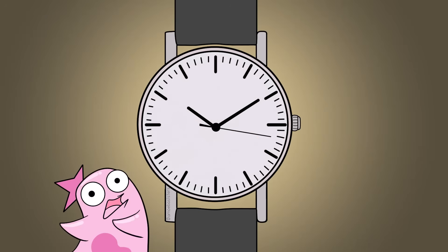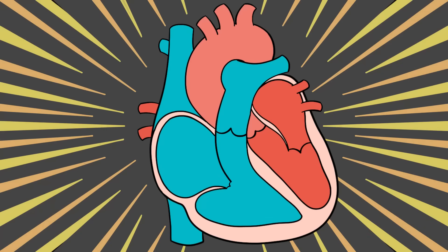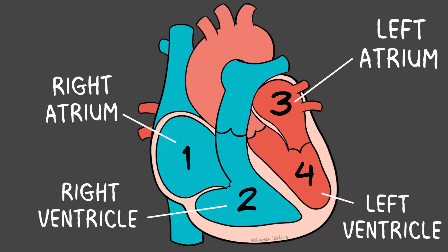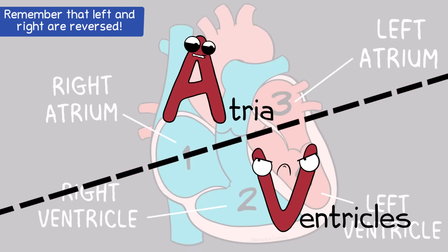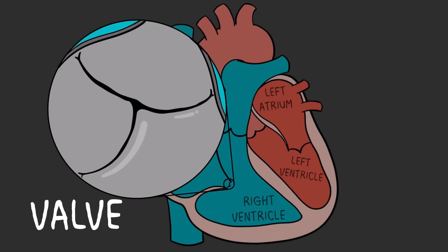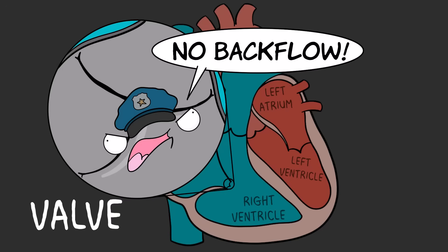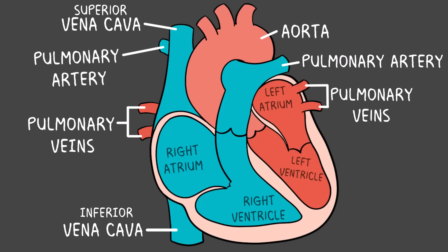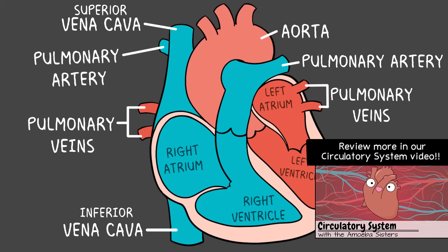Here is the human heart and here are major structures that we've mentioned in our circulatory video — the major chambers, the ventricles and the atria. I always remember 'A comes before V in the alphabet,' so that helps me remember the atria are on top and the ventricles are on the bottom. We had mentioned the valves, which prevent backflow of blood, and we also mentioned major arteries and major veins.